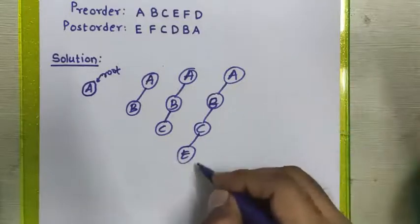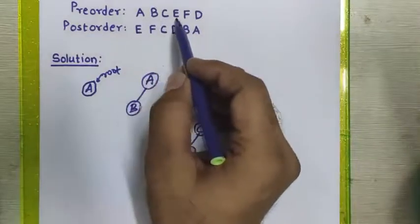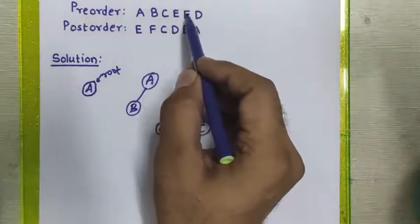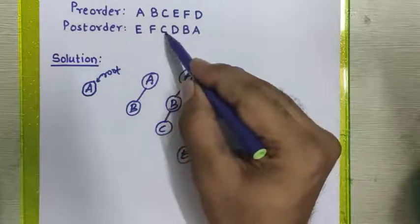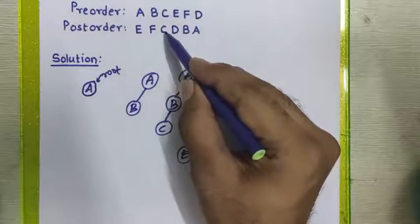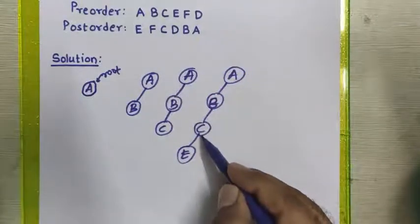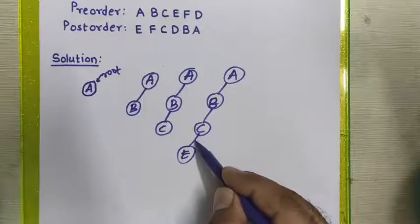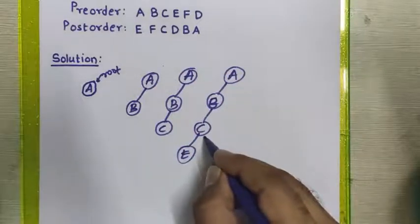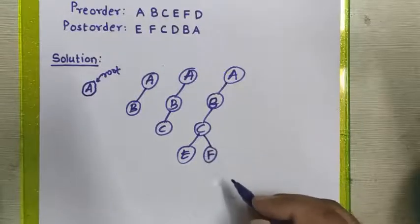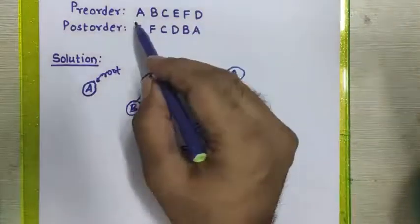After placing node E, we pick the next element from pre-order: node F. We check it in the post-order sequence — it appears before A, before B, and also before node C, meaning it is part of node C. Going to the diagram, we see that node C's left side is already occupied, so the incoming element is placed to the right side of node C. So F is placed to the right of node C.